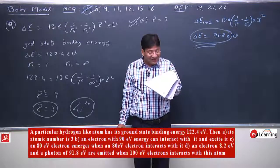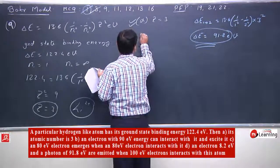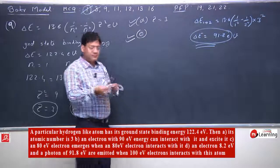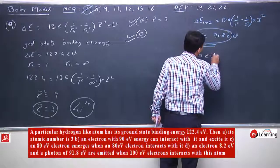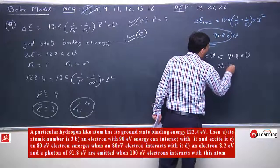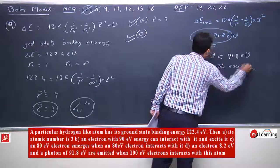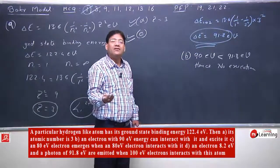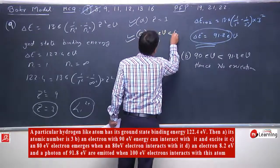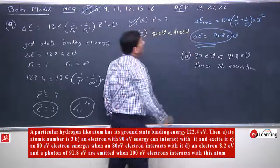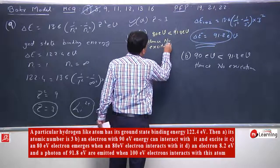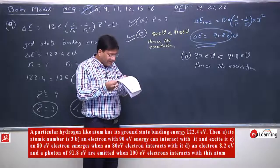90 eV electron emerges when 90 eV electron interacts with it. This is absolutely correct. 90 eV electron when it interacts, it cannot excite it. 90 eV is less than 91.8 eV. Hence no excitation. When there is no excitation, the electron will emerge as it is after interaction. It cannot bring any change inside the atom.